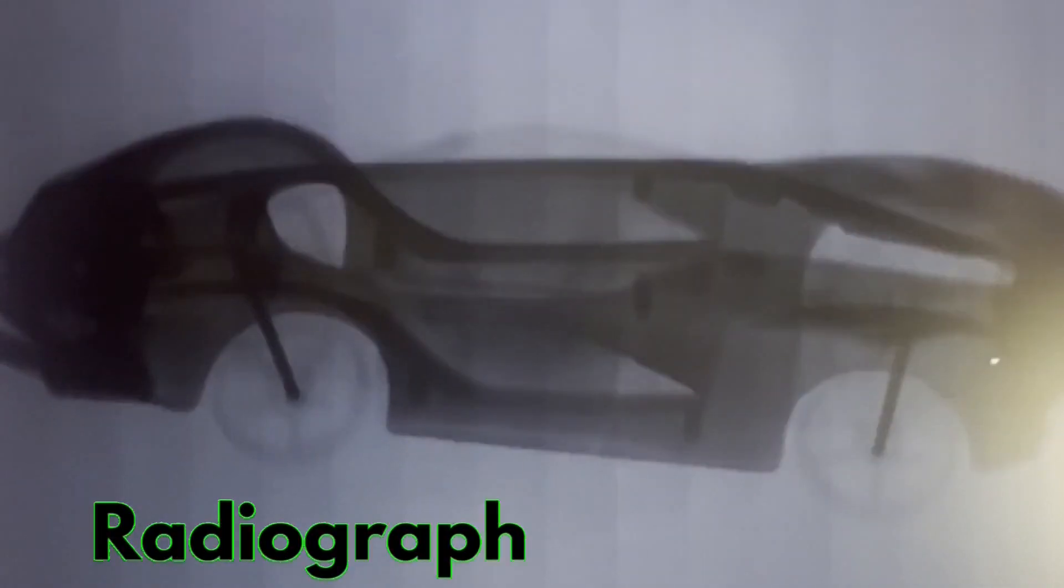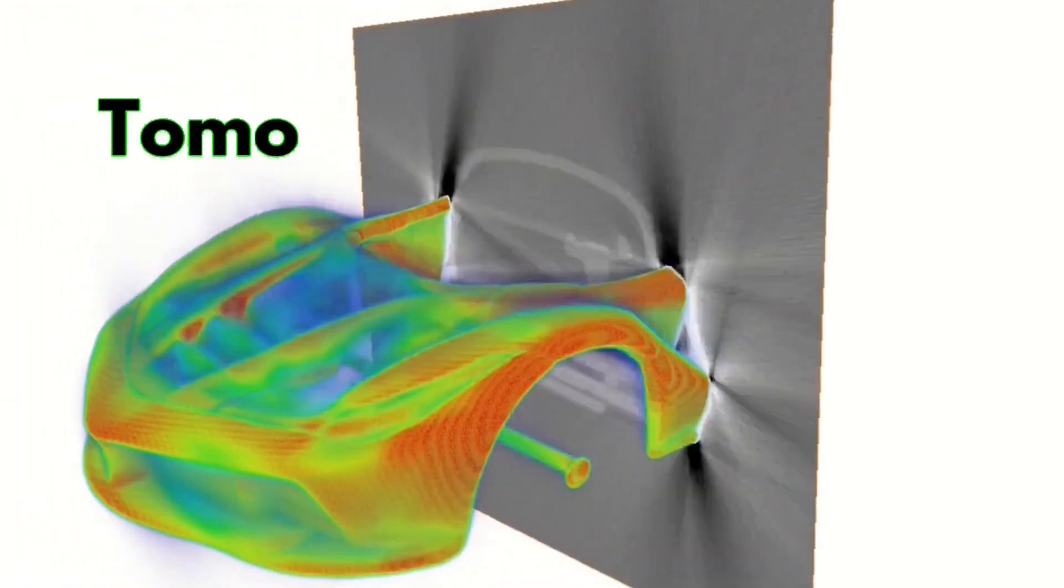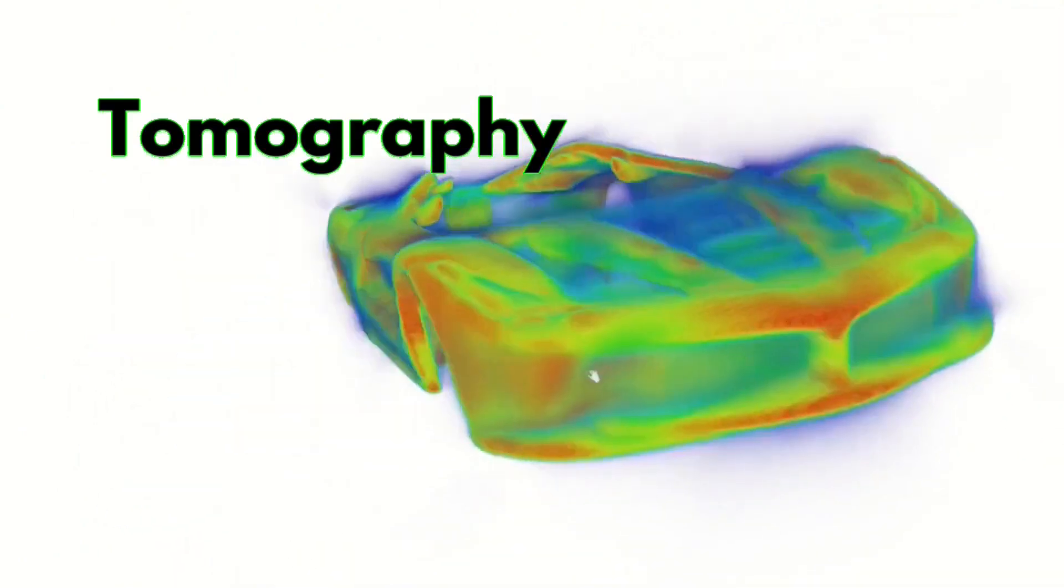You may remember this Ferrari from a What's in it Wednesday, where we used x-ray imaging to perform radiography and see directly through the car. And since then, we've done a full 3D imaging of the car, known as a tomography. But neither of these non-destructive imaging techniques would make the car radioactive.